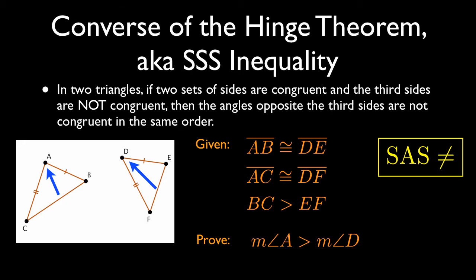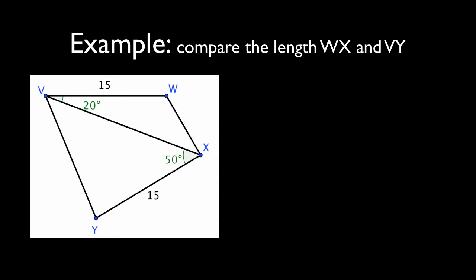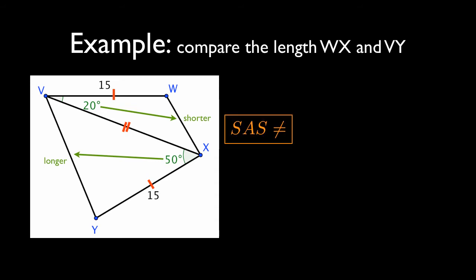Here we are asked to compare the lengths of WX and VY. WX is the shorter side of the triangle on top; VY is the unlabeled side of the bottom triangle. We see 15 is congruent to 15, we have a shared side VX, and angle 20 is less than angle 50. Therefore, the side opposite 20 is going to be shorter than the side opposite 50. Using the SAS Inequality Theorem — two pairs of sides (the 15s and the shared side) with information about the non-congruent included angles — we conclude that WX is less than VY.